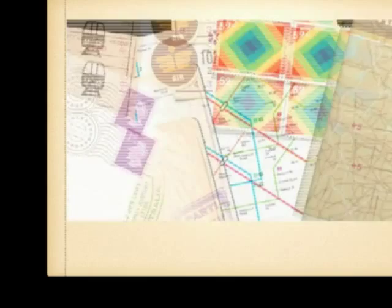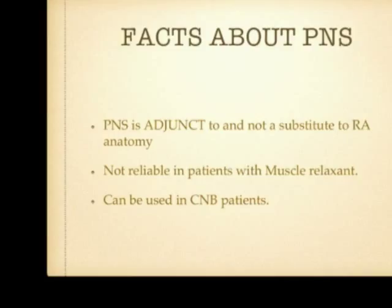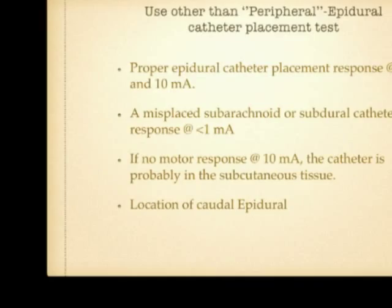The facts about PNS: it is an adjunct and not a substitute for anatomical knowledge — you must know regional anesthesia anatomy thoroughly. It is not reliable if the patient is given muscle relaxants. However, it can be used in central nerve patients also. Peripheral nerve stimulators can be used beyond peripheral blocks: for epidural catheter placement, contraction at 1 to 10 milliamps suggests correct placement, while less than 1 milliamp suggests misplacement, and no motor response at 10 milliamps means the catheter is probably in tissues. PNS can also be used to locate the epidural space in children.